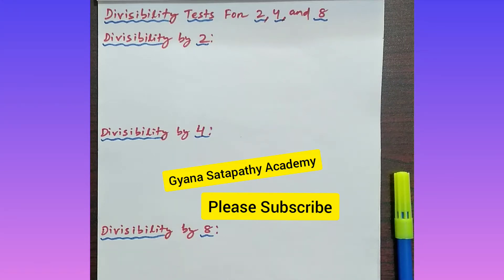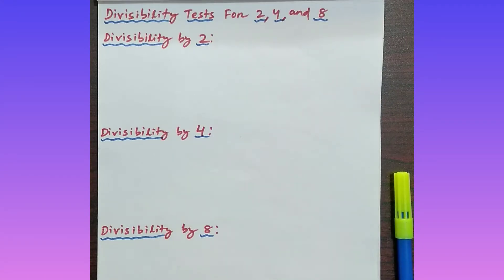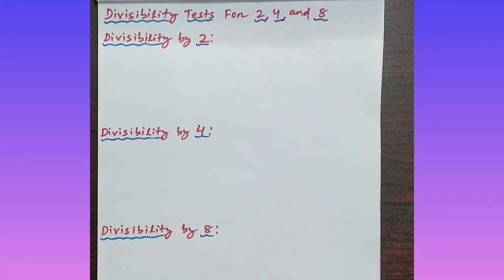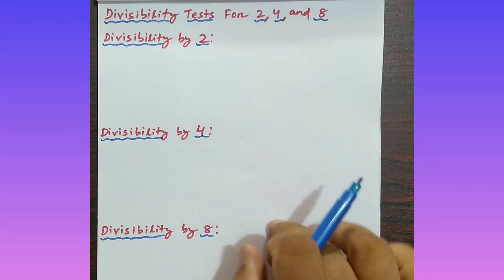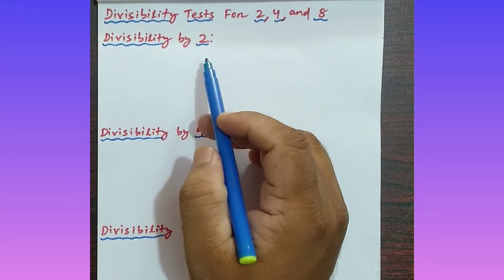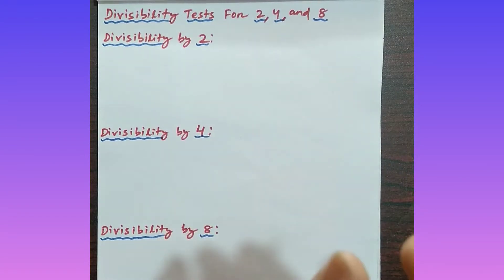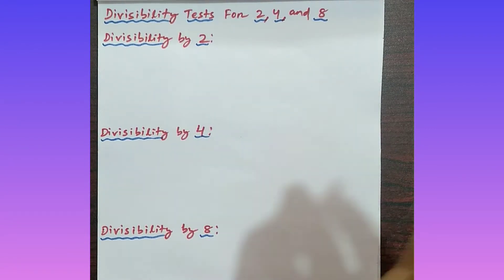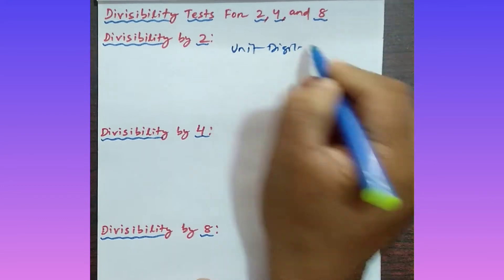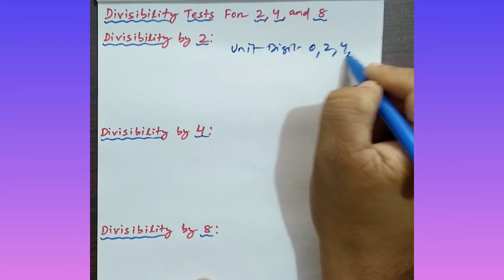Hello students, welcome to my YouTube channel. Today we are going to discuss divisibility tests for 2, 4, and 8. Let's start with divisibility by 2. Whatever number is given to you, you should look at the last digit — that is, the unit digit. If the unit digit is either 0, 2, 4, 6, or 8, then the whole number is divisible by 2.